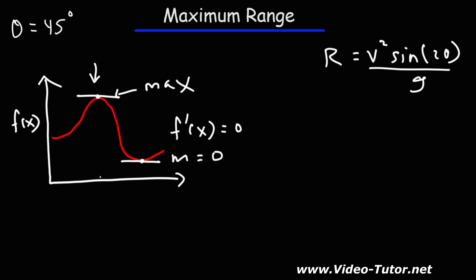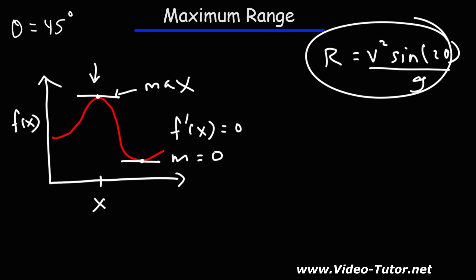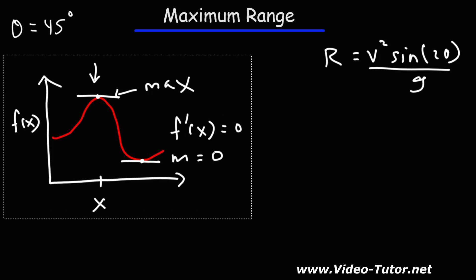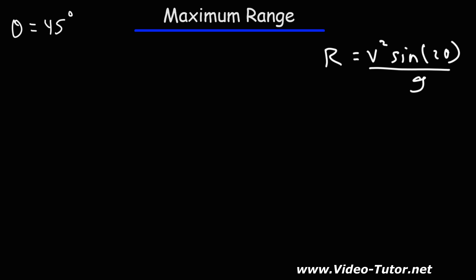In this problem we're solving for theta. The range is the function — it's like the y variable — and theta is like the x variable. So what we need to do is differentiate the range with respect to theta, set it equal to 0, and solve for theta. The angle we get is going to be the angle at which the maximum range of the projectile will occur. So to differentiate the range with respect to theta, this is going to be dR/dθ.